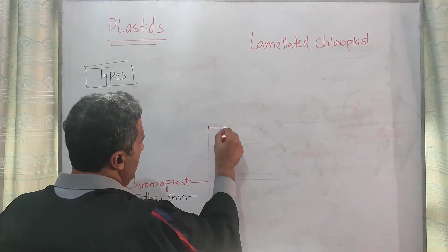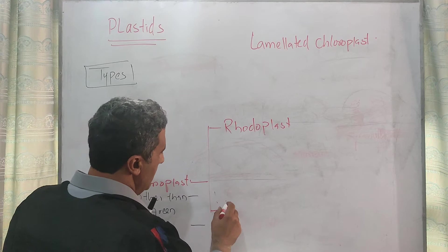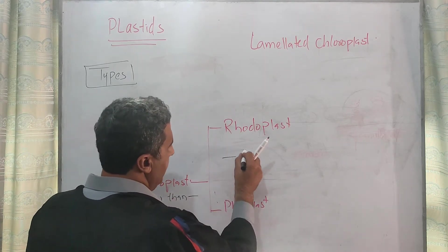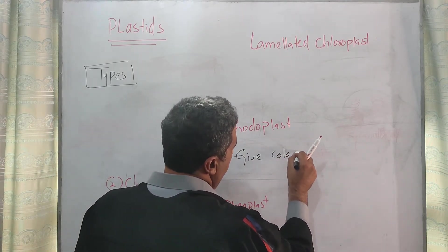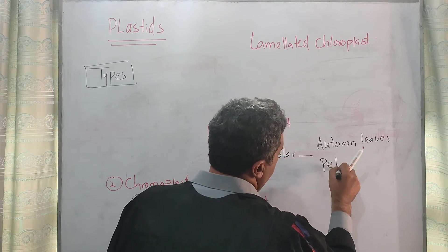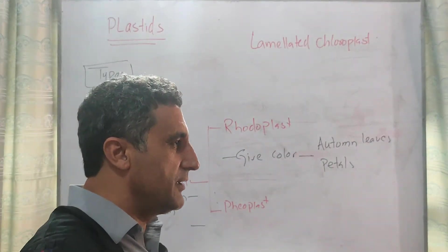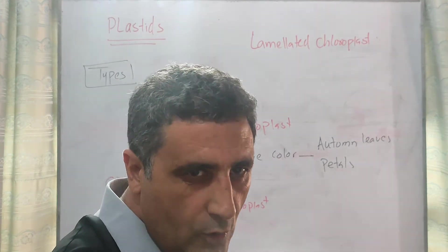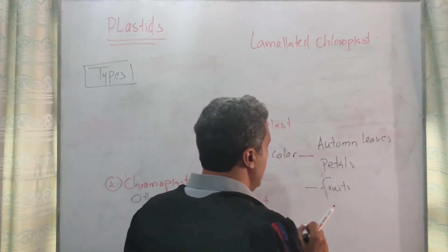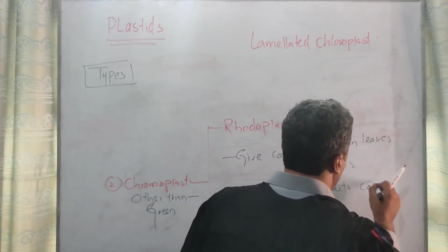They may be red in color, so there are rhodoplasts. They may be brown in color, so they are known as phaeoplasts. They give color to autumn leaves, to the beautiful petals. When you see the petals and all that which give colors, most of them are chromoplasts. And fruits which give beautiful colors and seem delicious when we see them — that is the work of chromoplasts.